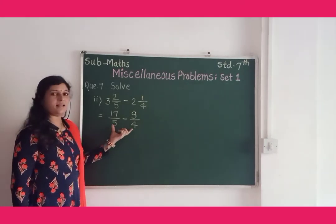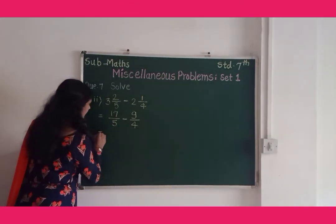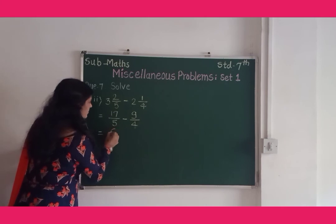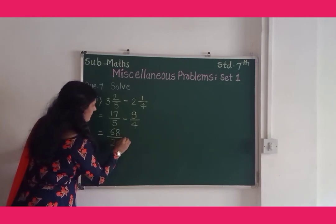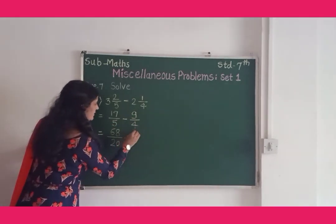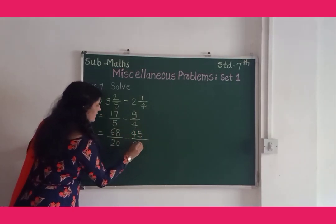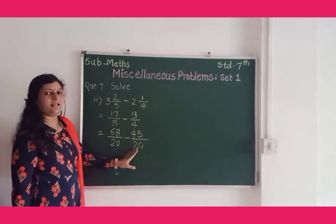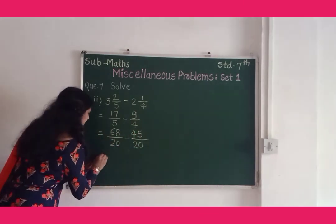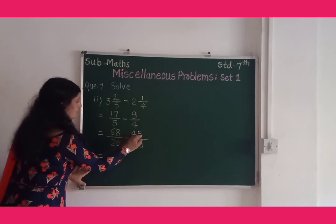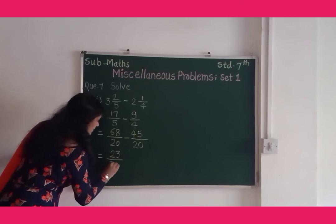Here the denominators are different, so first we make the denominators equal. 17 upon 5: multiplying gives 68 upon 20, minus 9 upon 4: multiplying gives 45 upon 20. Now the denominators are the same, so we subtract the numerators: 68 minus 45 is equal to 23 upon 20.